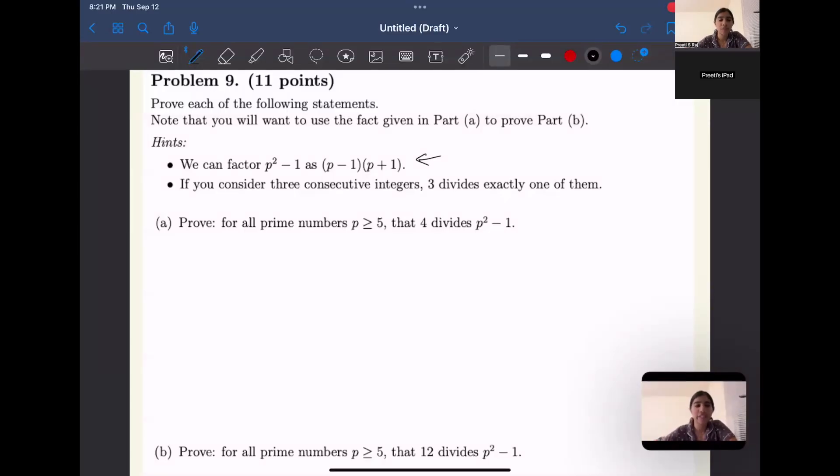Okay, so now we're working on problem nine from practice exam two, where we're supposed to prove two following statements. They've given us a note that we can use the fact in part A to prove part B, and also two hints: we can factor p squared minus one as p minus one times p plus one, and if you consider three consecutive integers, three divides exactly one of them. Using that, we're supposed to prove that for all prime integers p greater than or equal to five, then four divides p squared minus one.